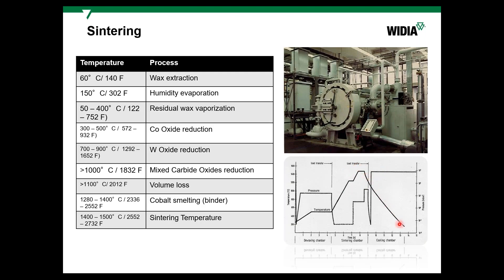After sintering, the inserts are cooled, and the cooling rate also influences the final structure and grain size. Some grades are designed with a gradient substrate — a non-uniform structure through the volume — which optimizes properties for CVD-coated grades for steel and stainless steel machining. Cooling rate influences this gradient structure significantly.